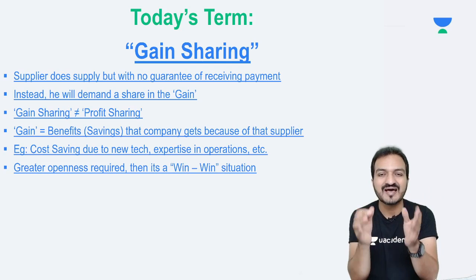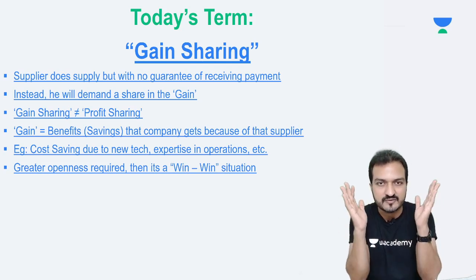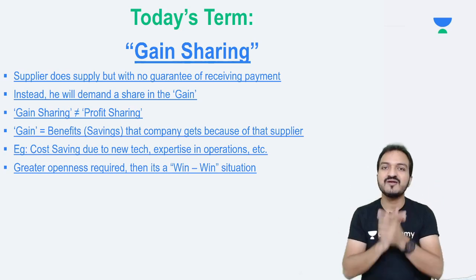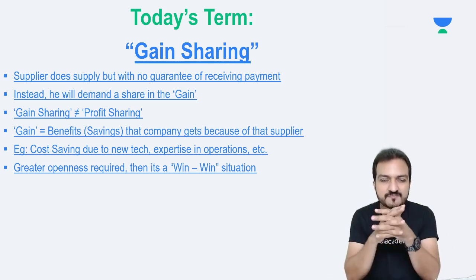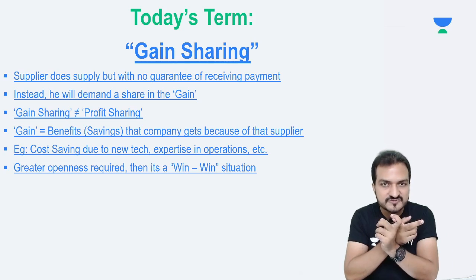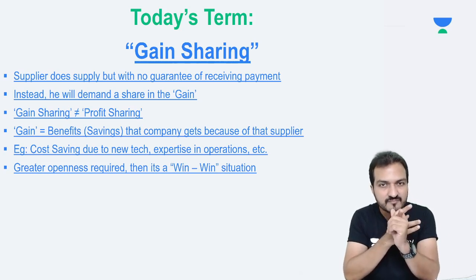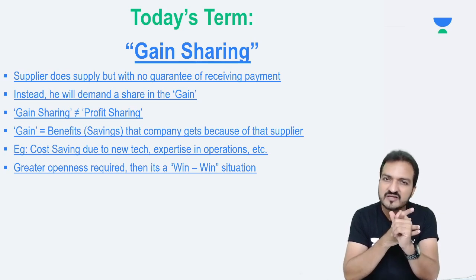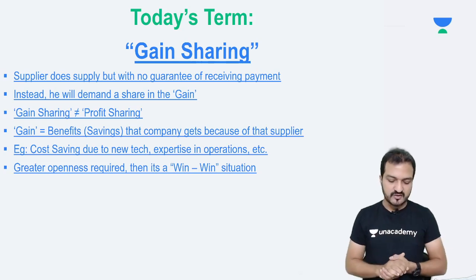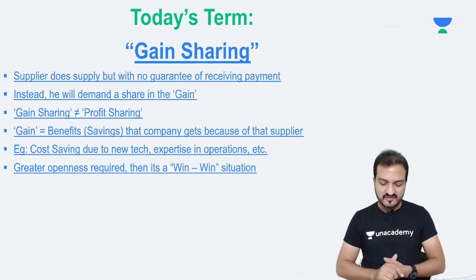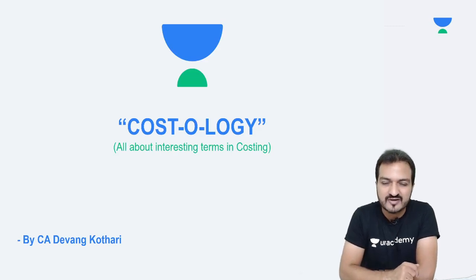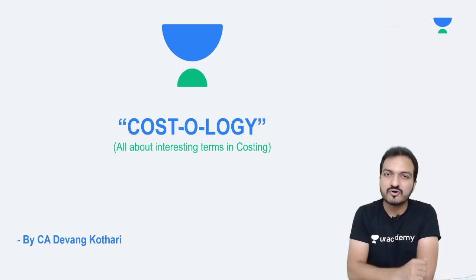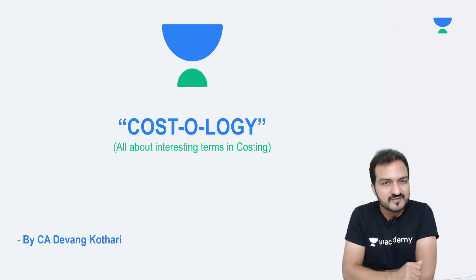This type of arrangement is called a gain sharing arrangement. From your exam viewpoint, this topic is very useful mainly for case studies. It doesn't come in practical questions and will rarely come as direct theory — if they want to ask a theory question, they'll likely give you a case study about this. So basically, this is what gain sharing is all about, and that is the end of today's Costology series session. I hope you enjoyed that. Thank you very much. Stay logged on to my channel for more such videos. Bye-bye.